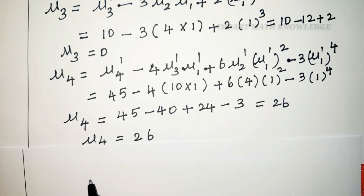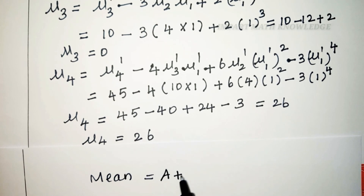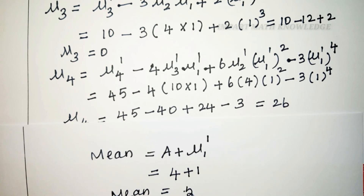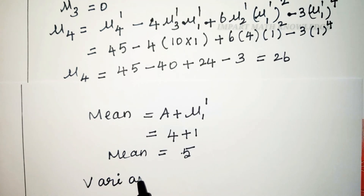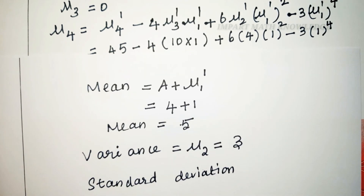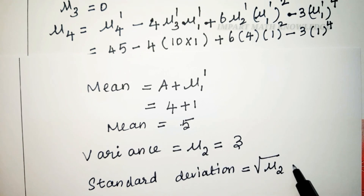Mean equals A plus mu1 dash. Here A equals 4 and mu1 dash equals 1, so mean equals 5. Variance equals mu2, which is 3. Standard deviation equals the square root of mu2, which is root 3.